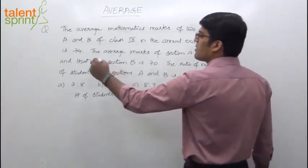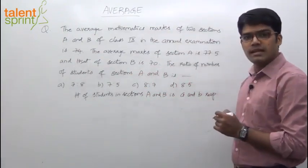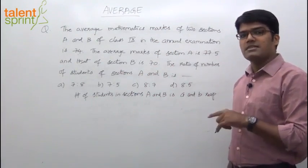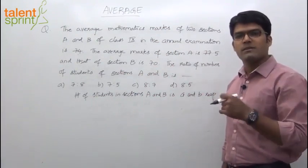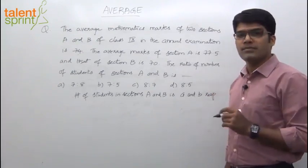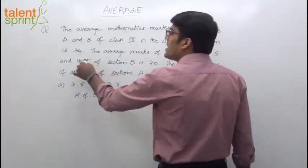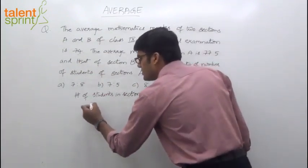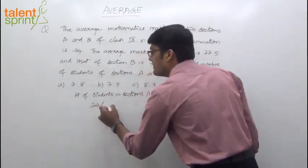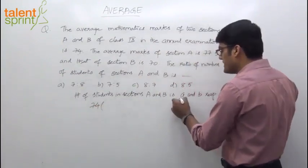The average marks of both sections is 74. Now we know that when average is given, we can find out the total. How do we get total or sum of all the values? Average into the number of values. So what will be the sum of marks of all students in section A and B together? The average is 74 multiplied by total number of students, which is A plus B.